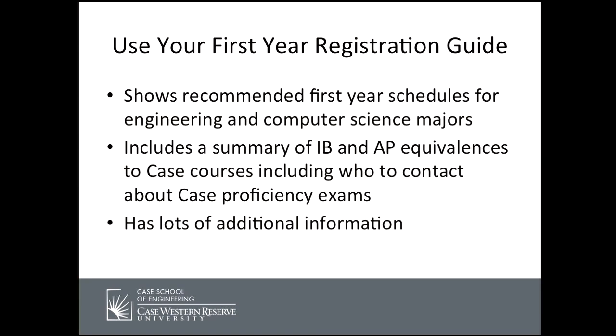The big one is the First Year Registration Guide, which you probably have received or will receive shortly by email. This is between 100 and 200 pages of detailed information about course requirements, transfer credits, advanced placement, phys ed, and suggested first-year courses. Pretty much everything you ever wanted to ask about first-year registration is in this guide. We're going to cover some highlights as they relate to planning your schedule for your first year and first semester.